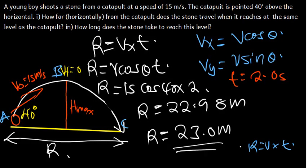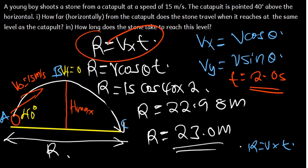So the range is 22.98 meters, or approximately 23.0 meters — that is the answer for part A. For part 2, how long does the stone take to reach this level? The answer is the same time we already found: 2 seconds, because you can't find the range without finding the time first. This is how you solve this type of projectile motion question.